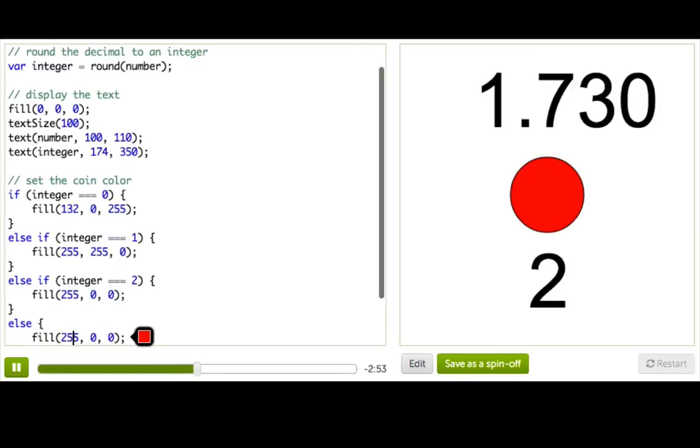And then this last else block will be for when an integer is equal to 3, and I'll make that blue.